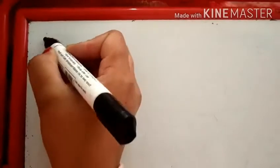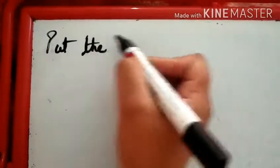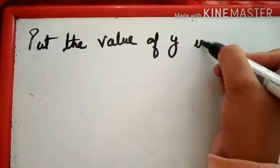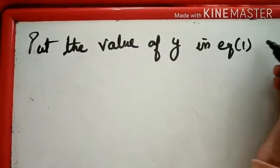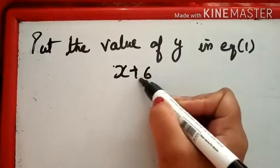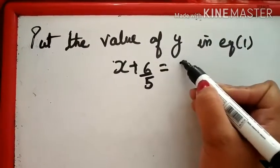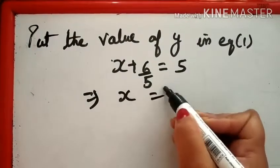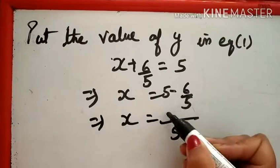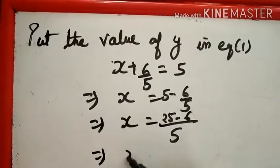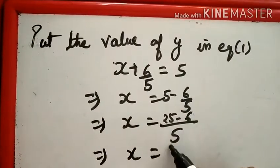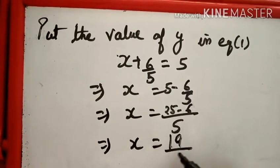So Y is equal to 6 upon 5. अब क्या करेंगे — put the value of Y in Equation First. हमारे पास X + Y = 5 है, Y is 6/5, equal to 5. This implies X = 5 − 6/5. This implies X = (25 − 6)/5 = 19/5.